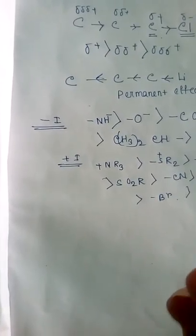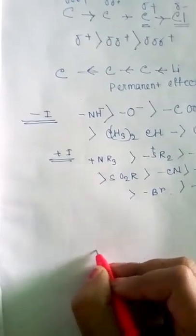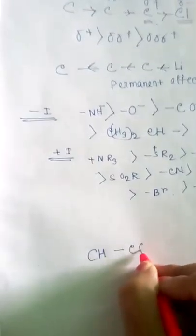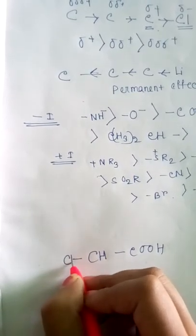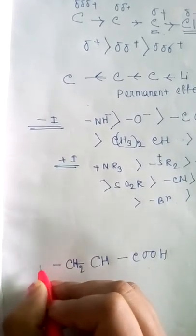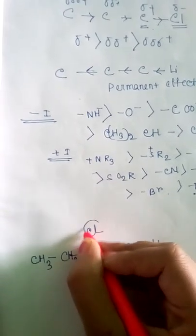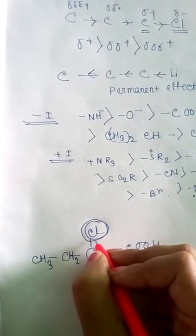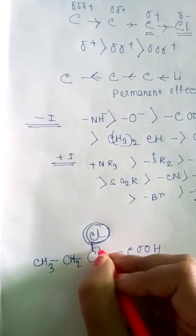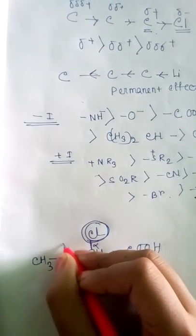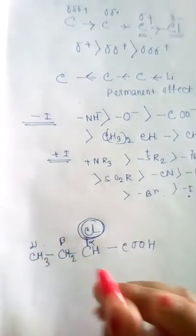Now alpha, beta, and gamma carbon. For example: CH2, CH3, chlorine — a negative charge is transferred to the carbon atom. The alpha carbon is faster, and gamma is the same thing.